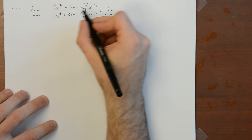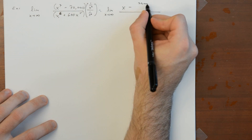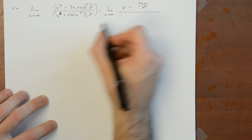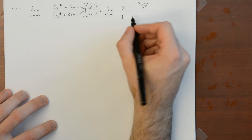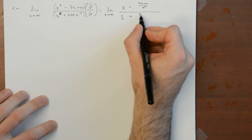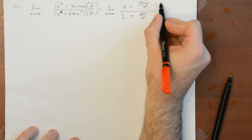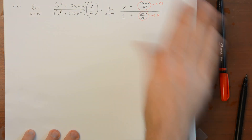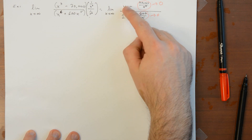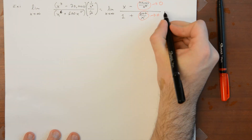When you do this, x to the 7th divided by x to the 6th is just x, then minus 70,000 over x to the 6th. In the denominator, x to the 6th times 1 over x to the 6th is 1, and then 600 times x to the 5th divided by x to the 6th gives 600 over x. Now using the limit laws, the 70,000/x⁶ term goes to 0 and the 600/x term goes to 0. All that really matters is the x in the numerator, and as x goes to infinity, x goes to infinity, so dividing by 1 plus a little bit doesn't change that — this diverges to positive infinity.